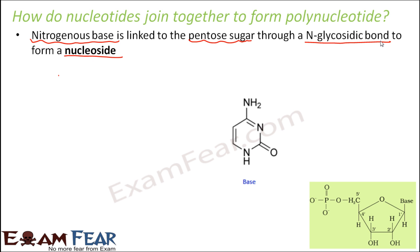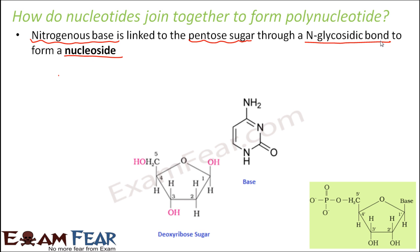Let us suppose this is a base on screen. Which is it — purine or pyrimidine? It is a pyrimidine. Why? Because it doesn't have a double ring structure. Wherever you have a double ring structure it can be a purine, but otherwise it is a pyrimidine. So this pyrimidine base will get connected to the sugar.